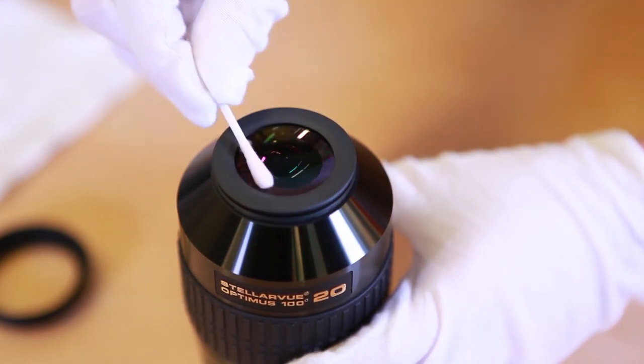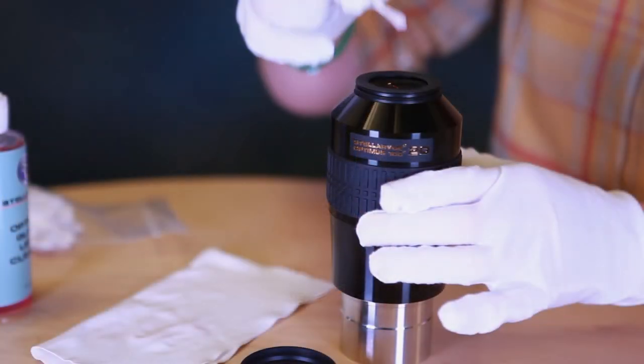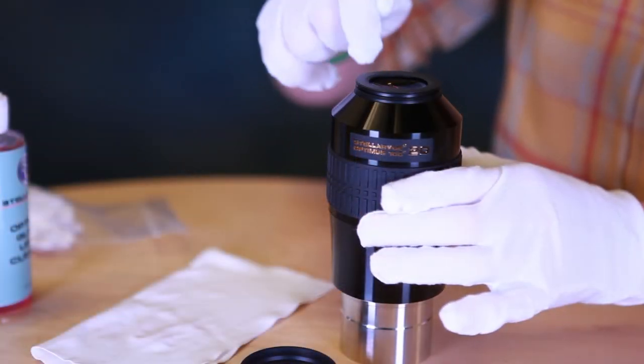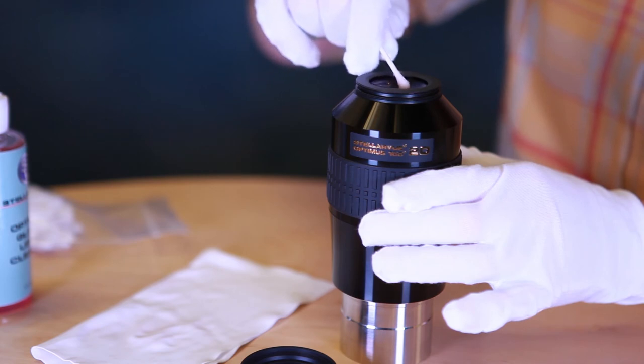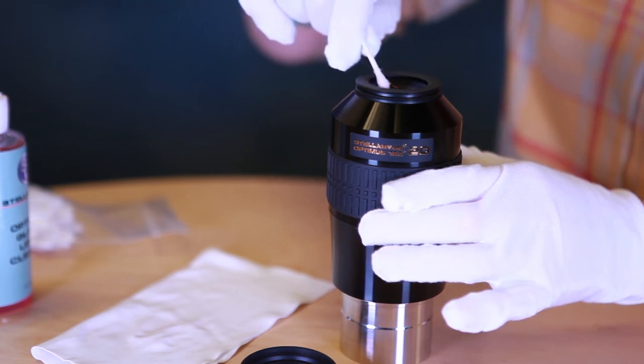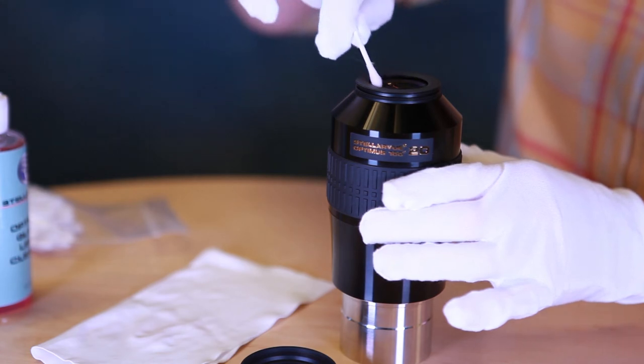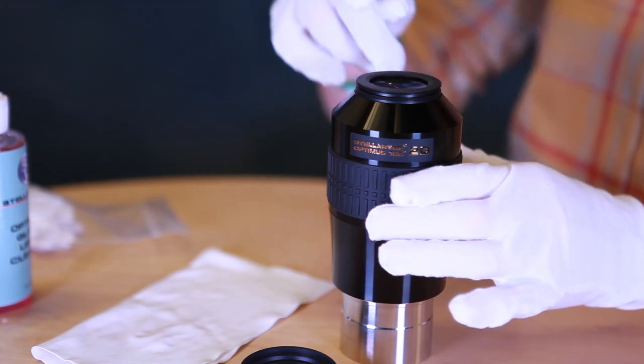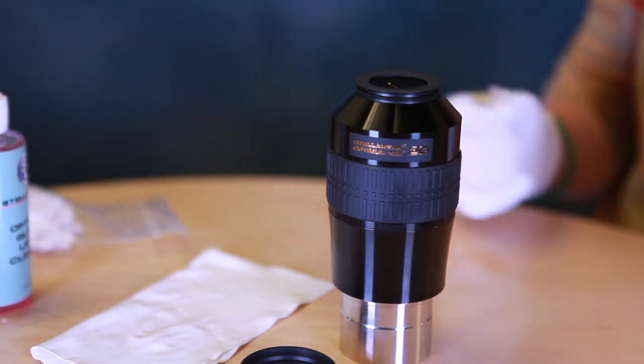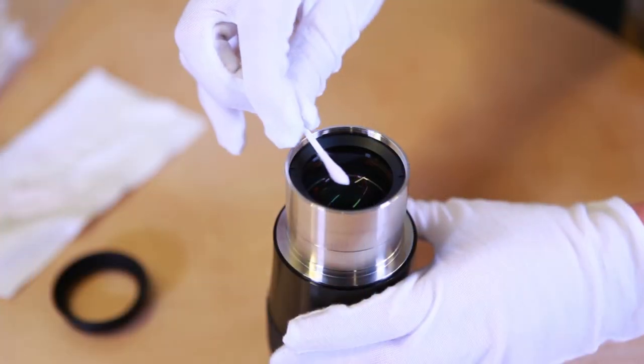Then take a dry cotton swab and repeat the process. This should get rid of all of the lens fluid that ends up on the lens surface. And with a little bit of work and technique, you can get rid of the streaks. Do the same thing with the field lens.